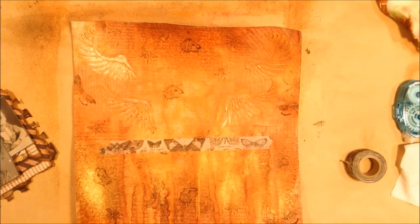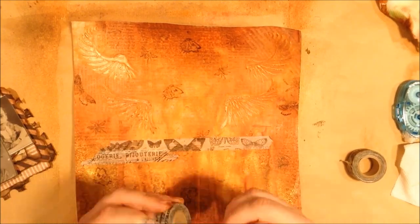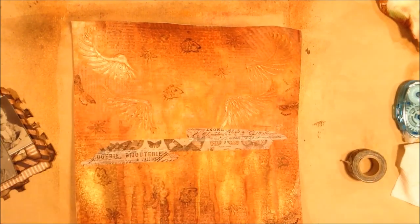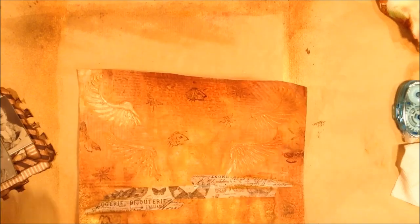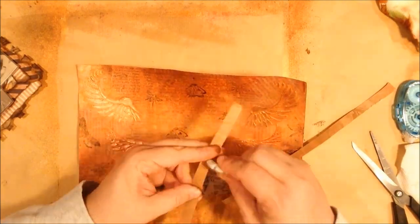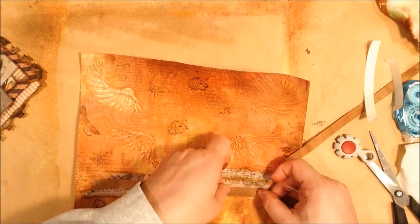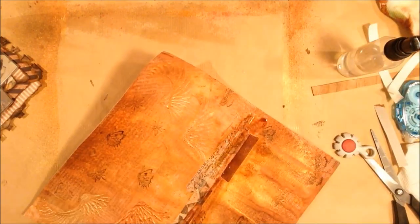And now I'm using some Tim Holtz washi tape that has like moths on it and one that has just some script. And I'm going to sort of darken them up. I'm using a big brush pen. I used some sprays to darken them up a little bit.